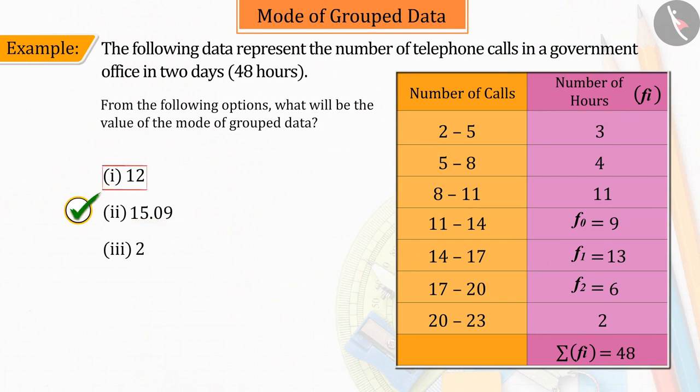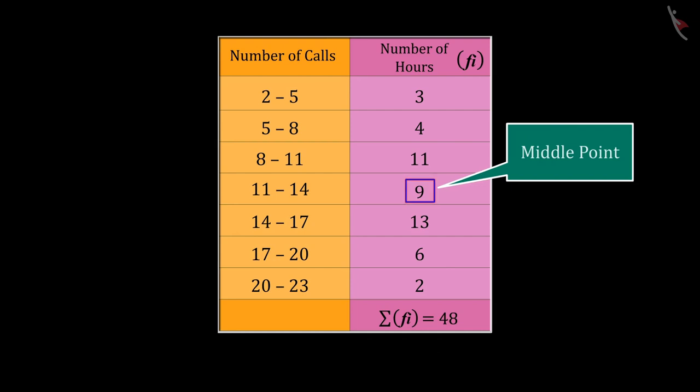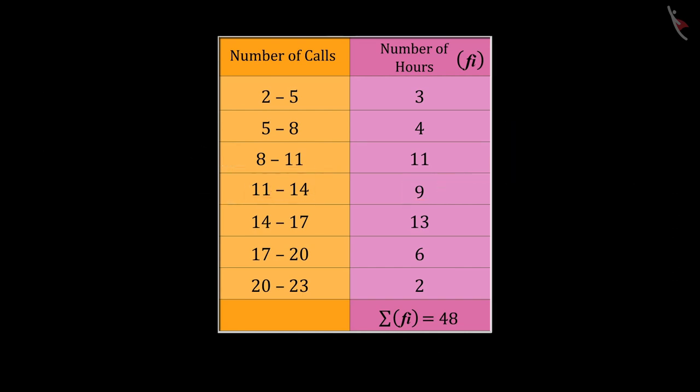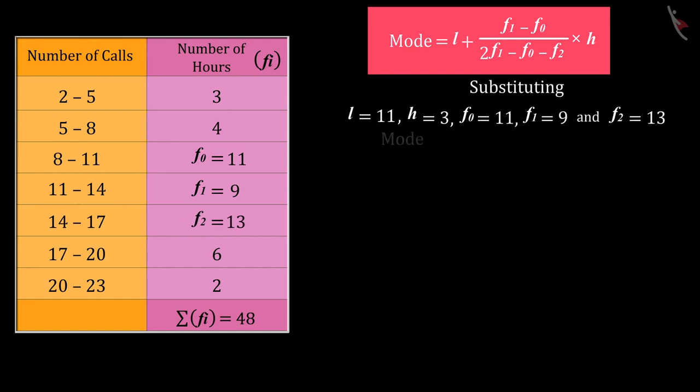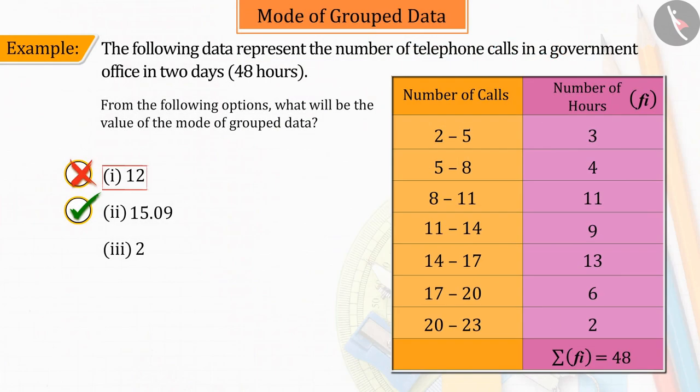If you have selected option 1, it is a good try. But this answer is wrong. Because, instead of the highest frequency, you choose the midpoint of the frequencies, and on the basis of that, have started to solve the question, upon solving which the value of mode is obtained as 12, which is the wrong answer.